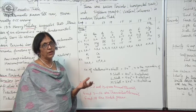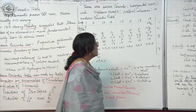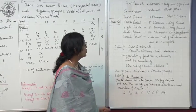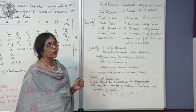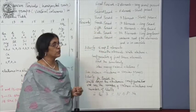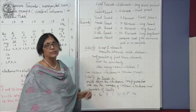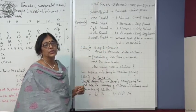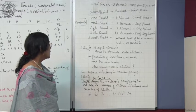The fifth period will have 5 shells and the sixth period will have 6 shells. The first period has 2 elements — it is a very short period. The second and third periods have 8 elements each — these are short periods. The fourth and fifth periods have 18 elements each — these are long periods. The sixth period has 32 elements — it is a very long period. The seventh period contains the rest of the elements and is incomplete.